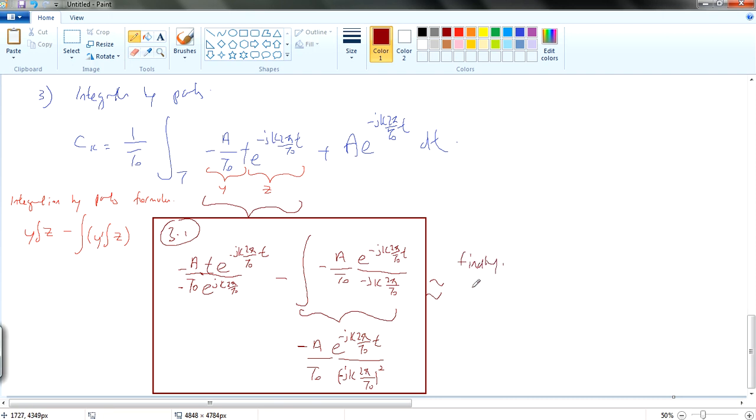And therefore, finally, we have minus A T e^(-jk 2π/T0 t). Minus T0 e^(jk 2π/T0). Since it's minus minus we plus. Plus A T0 e^(-jk 2π/T0 t).